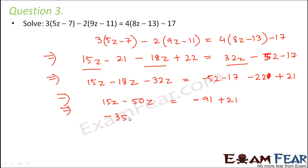So this becomes -35z is equal to -70, or we can say z is equal to -70 by -35. So 35 into 70, minus minus will cancel out. So we will get 2. So therefore z = 2 is a solution for this equation.